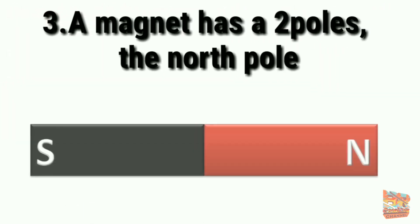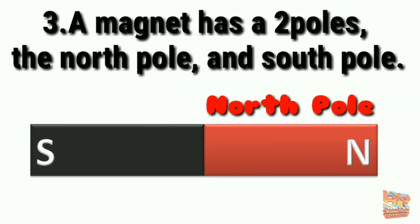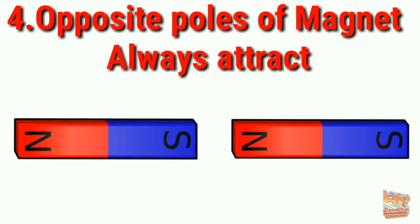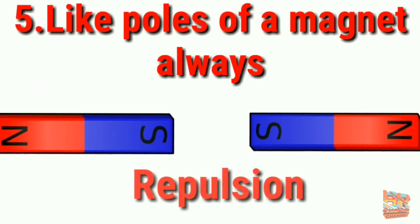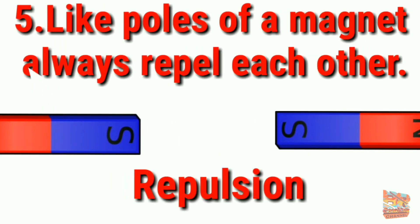Third property: A magnet has two poles, the north pole and south pole. Fourth property: Opposite poles of two magnets always attract each other. Fifth property: Like poles of a magnet always repel each other.